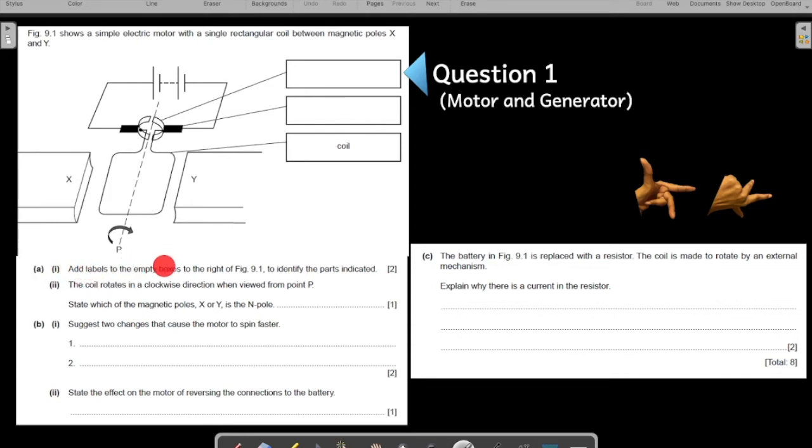Add labels to the empty boxes to the right to identify the parts indicated. Since this is an electric motor, the first thing they are talking about are these rings. As you see, these rings are split. So it should be easy for you to identify that these are your split rings.